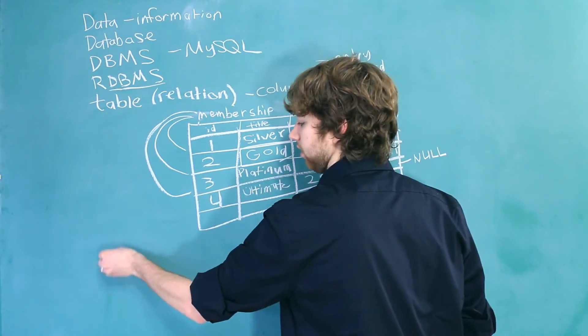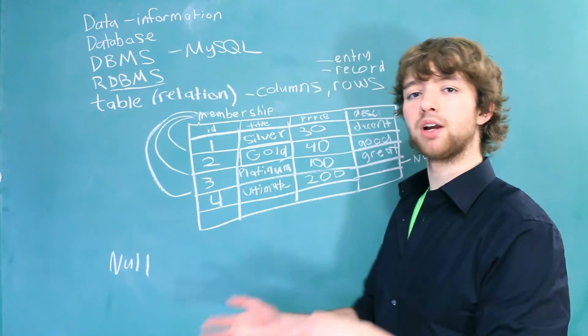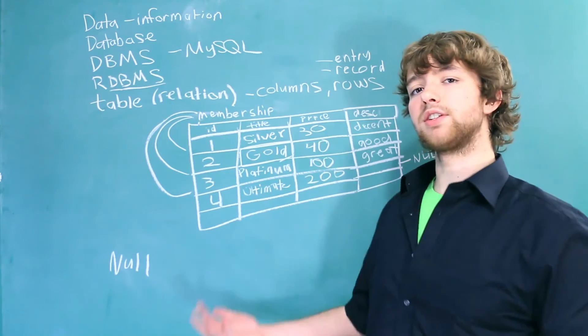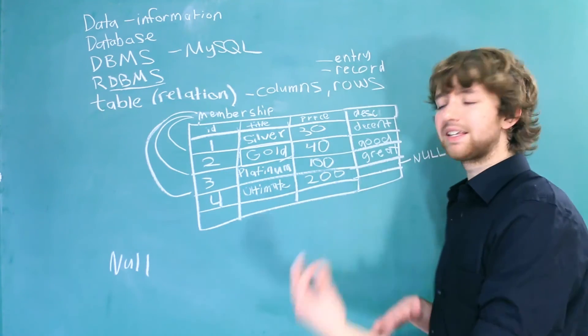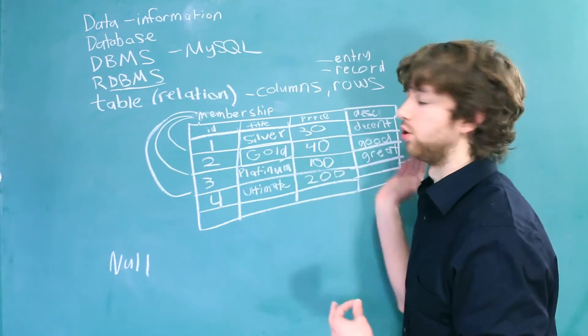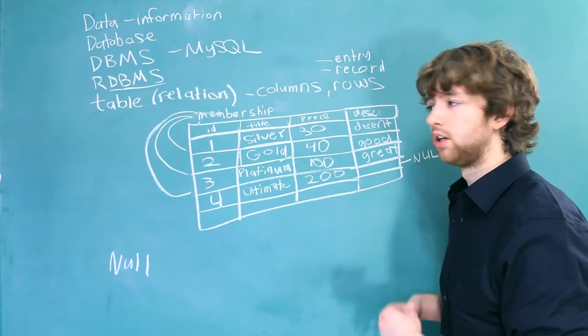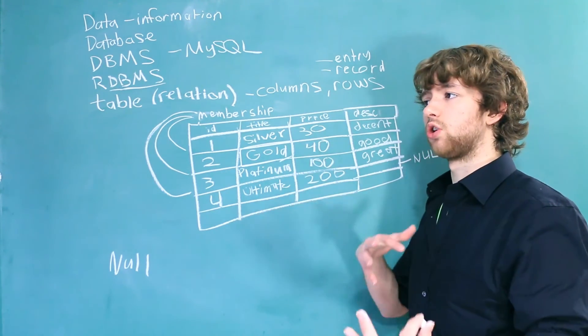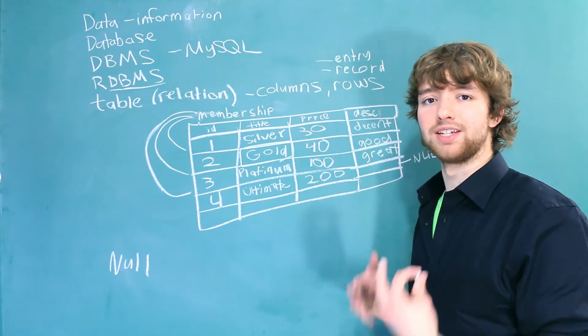So continuing our list, I'm going to put that down here. Sometimes that's appropriate. Sometimes that's not. It's often a decision you have to make. Does it make sense for this to be null? Or should we force every single row to have a value for this column?